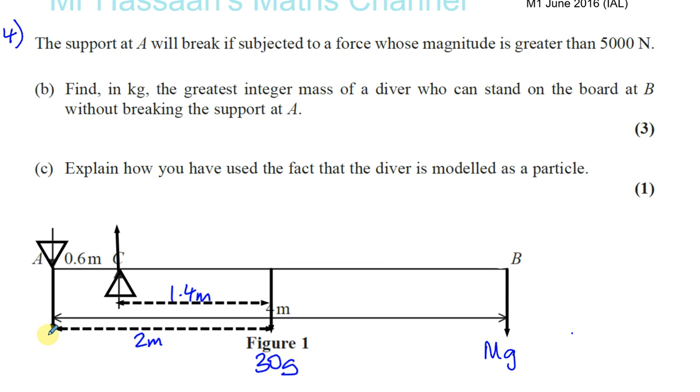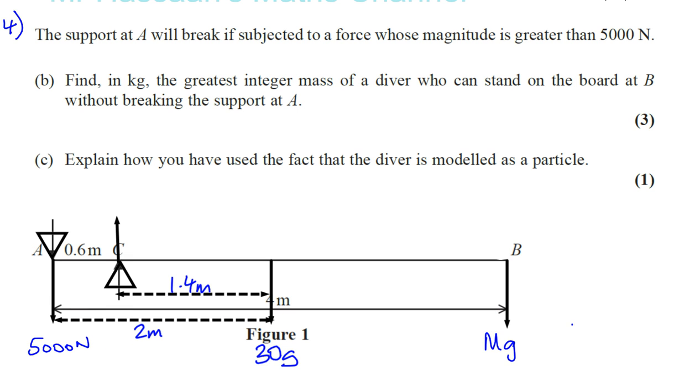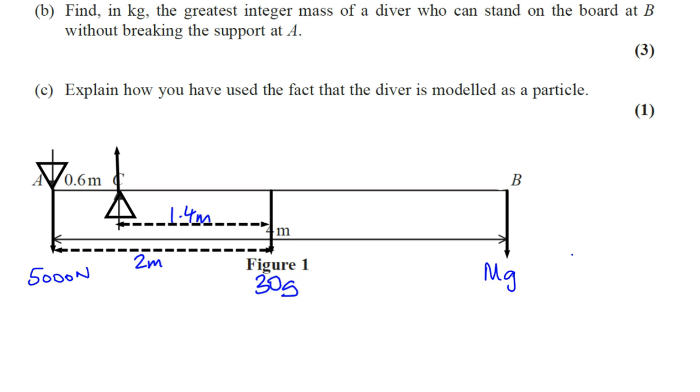So let's see what mass is required for this to become 5,000 newtons. Let's see what mass here we need for this to become 5,000 newtons, and then we can work from there. Once we've found the mass, we can say it has to be less than that particular value, and it has to be the integer that's less than it.